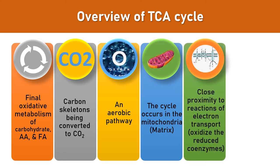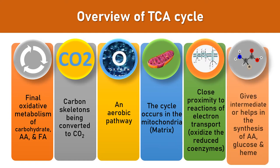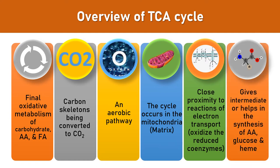All reactions of the TCA cycle occur in the mitochondrial matrix, in close proximity to the reactions of the electron transport chain. The oxidized forms of NAD and FAD are reduced inside the TCA cycle. Apart from generating reduced equivalents and energy, it also helps in the synthesis of amino acids, glucose, and heme.